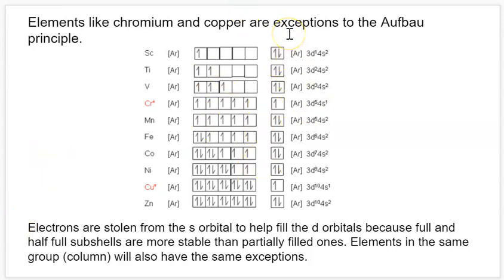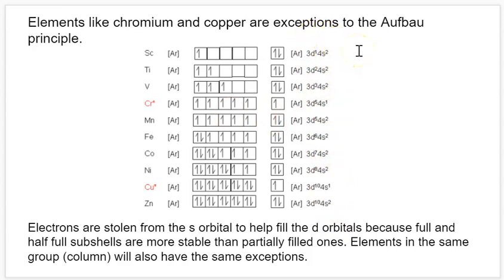We're only looking at the last row each element is in, assuming all subshells before that are full. So for scandium — the first element in the d block — it has two electrons in the s subshell and one electron in the d. You can see in the electron configuration that they sometimes show 3d before 4s, which is also valid. I prefer to order it in terms of the filling sequence, but either way is valid. The s subshell is full, and we have one electron in the d, representing 3d1.